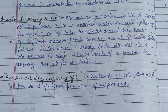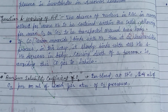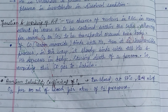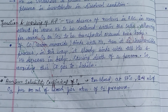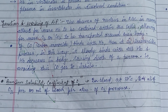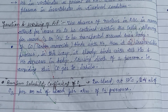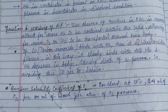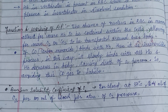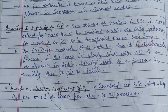The Bunsen solubility coefficient of oxygen in blood at 37°C is 2.4 milliliters of oxygen per 100 ml of blood per atmosphere of oxygen pressure. That covers all the respiratory pigments in different phylogenetic groups — keep watching, thank you.